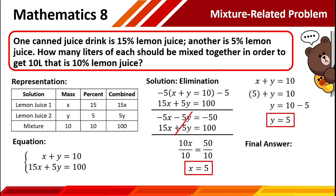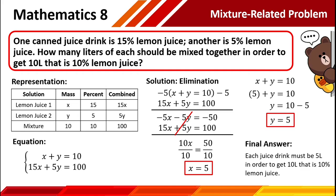What do we mean by x equals 5 and y equals 5? Let's go back to our original representation. x corresponds to the mass of lemon juice number 1, and y corresponds to the mass of lemon juice number 2. In this given problem, we are looking for how many liters of each should be mixed together to get 10 liters that is 10% lemon juice. Therefore, the answer is: each juice drink must be 5 liters. We need 5 liters of 15% lemon juice and 5 liters of 5% lemon juice.